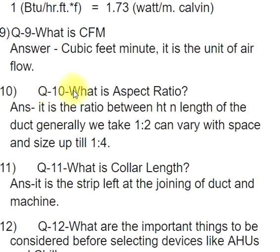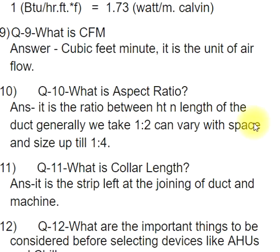Q10: What is aspect ratio? ANS: It is the ratio between height and length of the duct. Generally we take 1:2, which can vary with space and size up to 1:4.